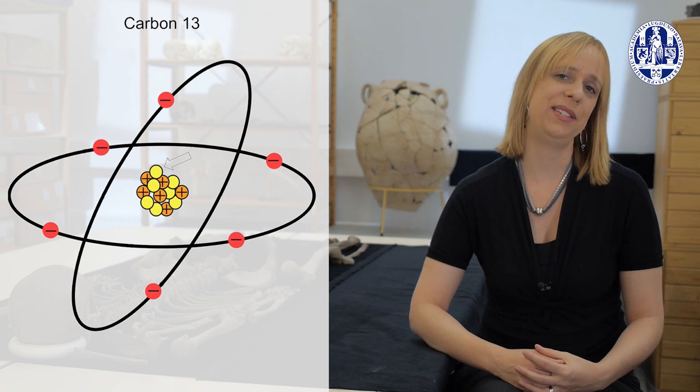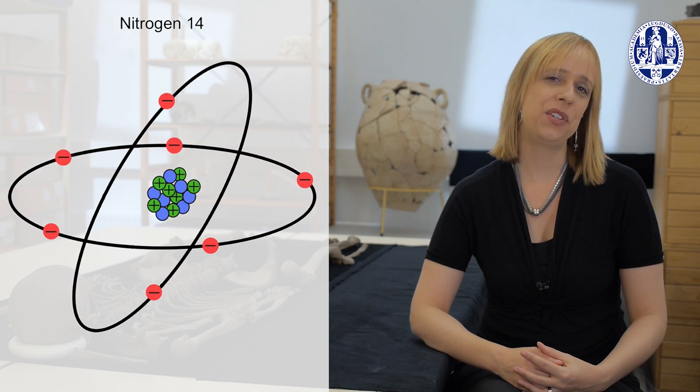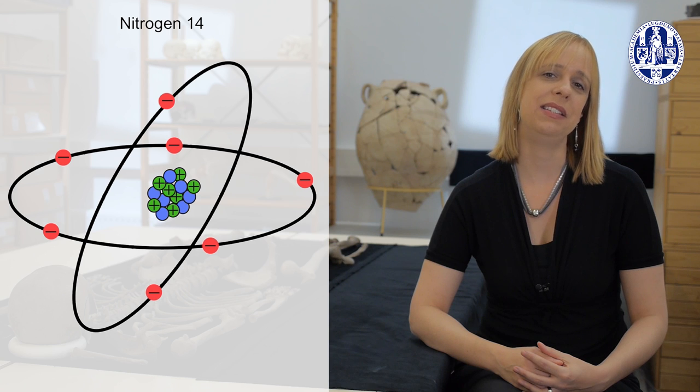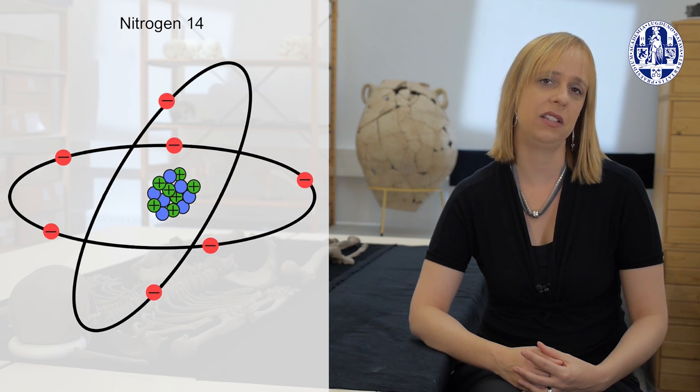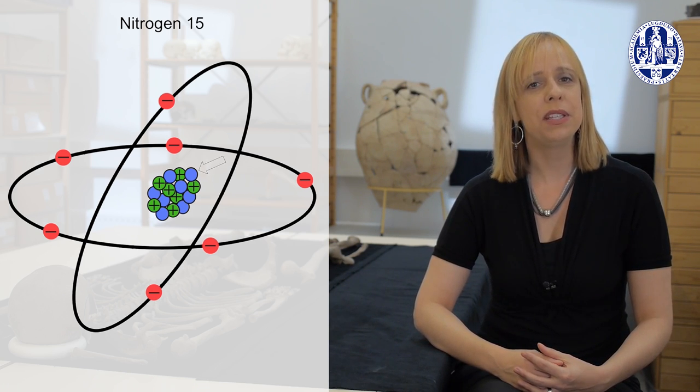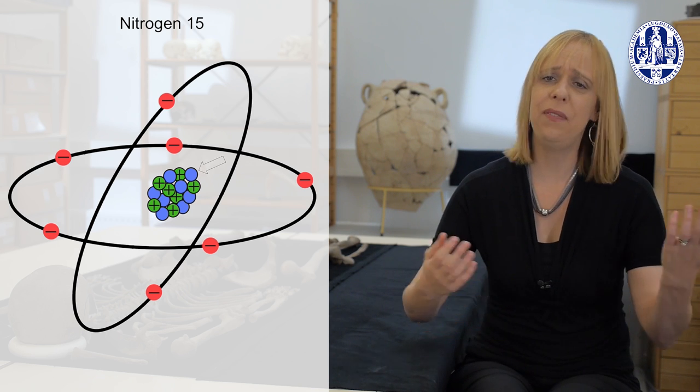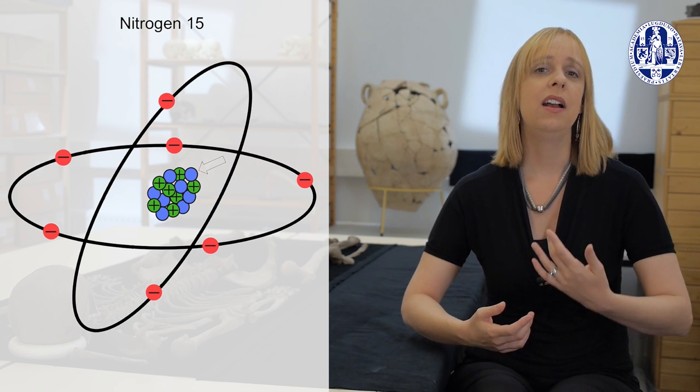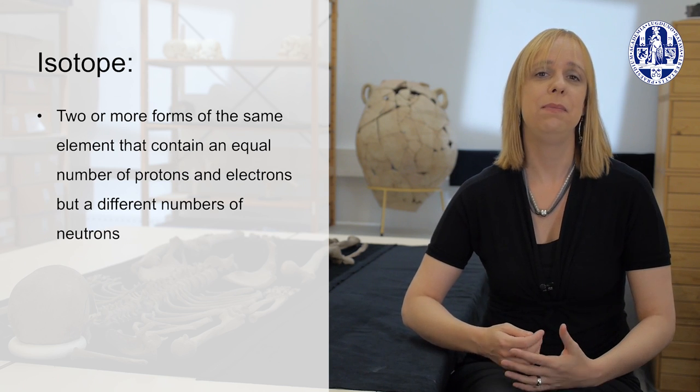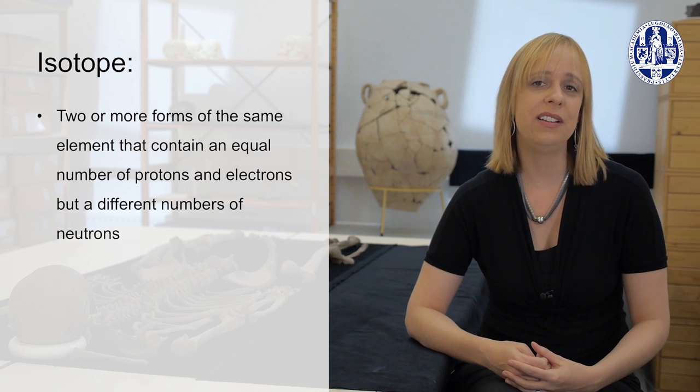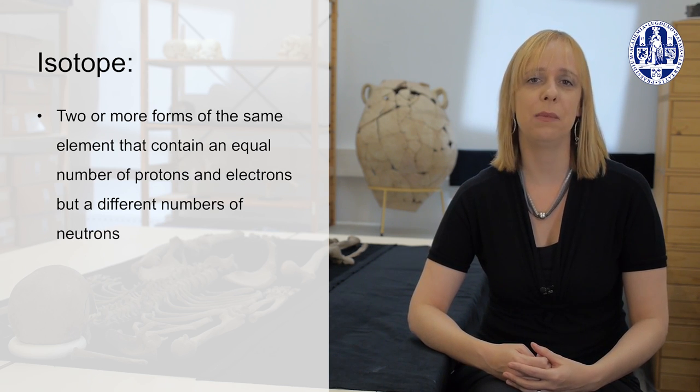The same idea applies to nitrogen. Most nitrogen atoms have seven protons and seven neutrons and thus are classified as nitrogen-14. But a small percentage have eight neutrons and thus are called nitrogen-15. And that's all an isotope is. Atoms of the same element, meaning they have the same number of protons and electrons with a differing number of neutrons.